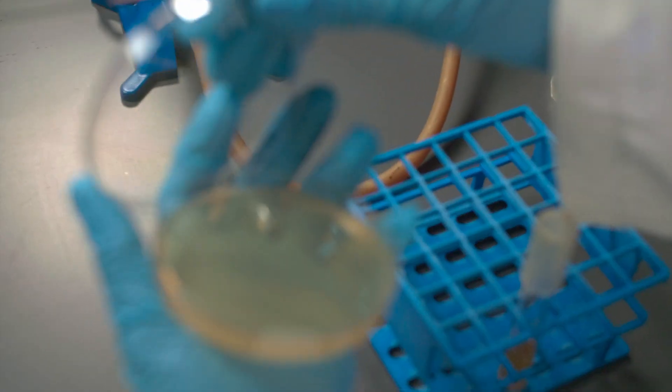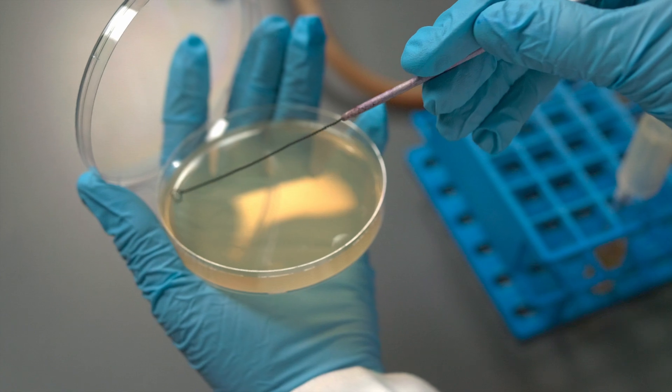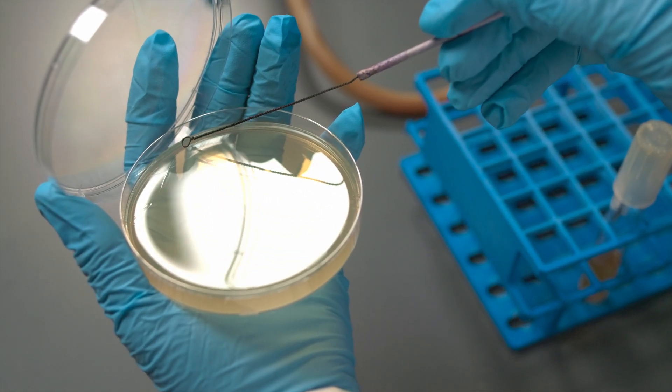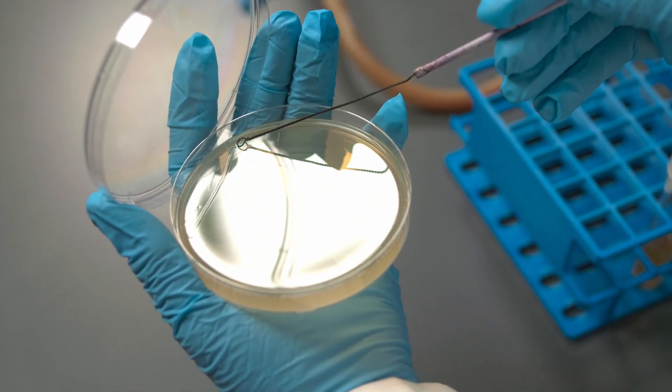Put the loop containing bacteria on the surface of the plate and make five streaks across it.